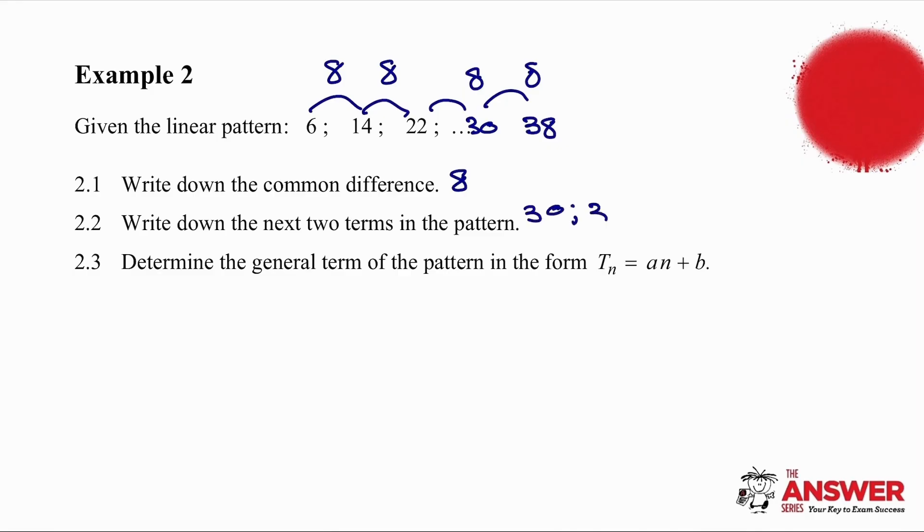Now we need to generate the formula for this. So we're going to do it by inspection. Tn equals 8 because that's the common difference, so the coefficient of n is always the common difference. Now we just need to work out by inspection what the b value is. So if we substitute the position value, when we substitute 1, we know the answer is 6. So 6 is equal to 8 plus b, and therefore b equals minus 2. So Tn is equal to 8n minus 2.